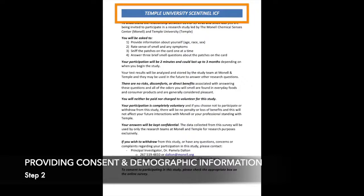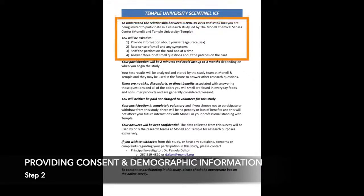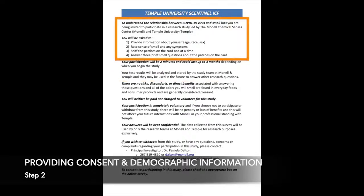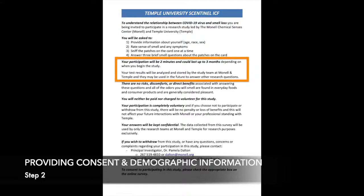The consenting process will cover four broad topics. The first is being informed about what they are being asked to do and why, plus how long it'll take. In short, for the purposes of understanding COVID and smell loss, people are being asked to provide information about themselves, smell from three stickers, then make ratings about what they detect, if anything, from the stickers that they smelled. This may take up to two minutes.